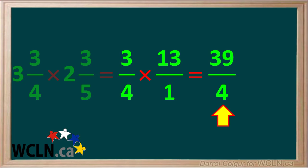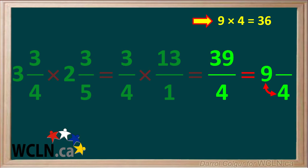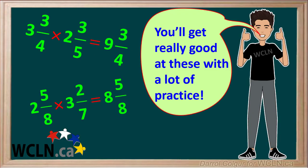3 times 13 is 39 and 4 times 1 equals 4. So the product of these two fractions is 39 over 4. 4 goes into 39, 9 times. So the whole number in our mixed number is 9. The denominator of the fraction is 4. 9 times 4 equals 36. And 39 minus 36 gives us a remainder of 3. So the numerator of our fraction is 3. And the final answer to this question is 9 and 3 quarters. The best way to get really good at multiplying mixed numbers is to practice them a lot.